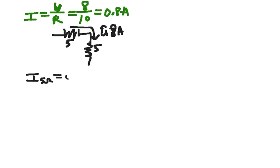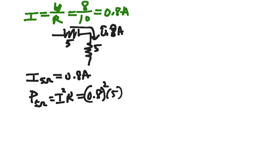So the current through our 5 ohm resistance is indeed 0.8 amps, and the power dissipated in that 5 ohms then is I squared R, 0.8 squared, 0.8 amps squared times 5 ohms. What does that give us? 0.8 squared times 5, 3.2 watts. So the power dissipated in the 5 ohm resistor we were concerned about is 3.2 watts.